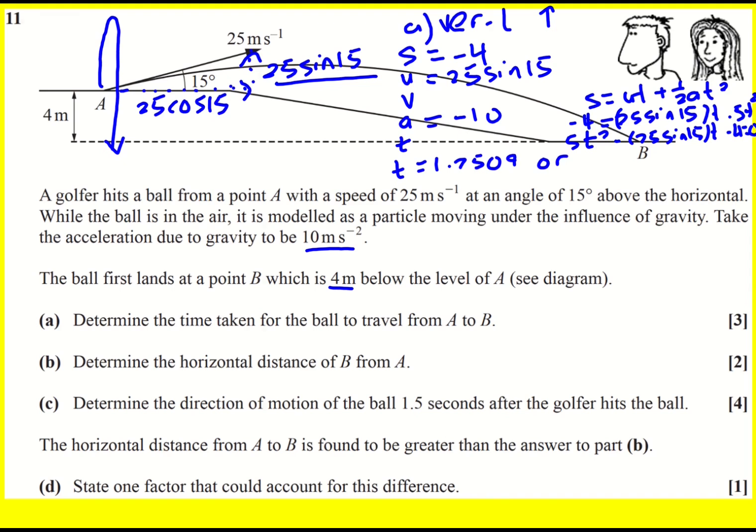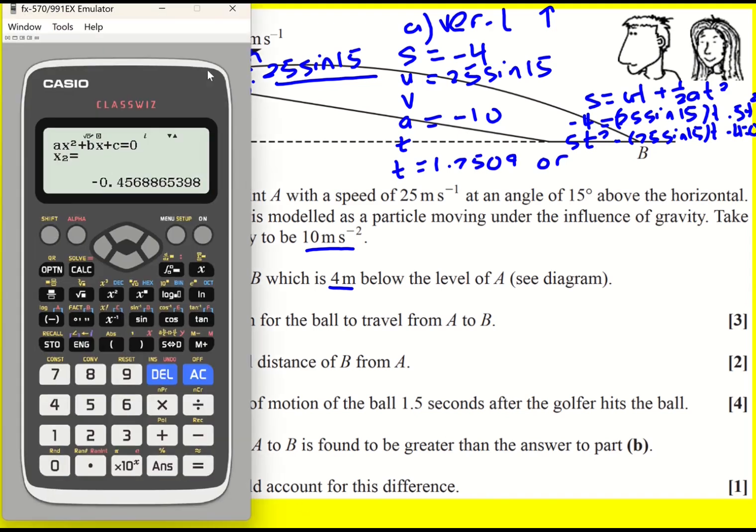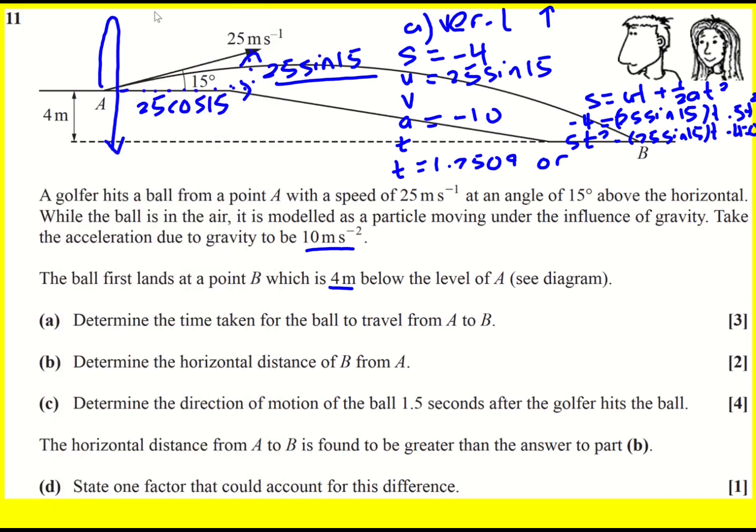There's going to be a second solution, I think it's good to state it, minus 0.4568. So that corresponds to this part of the curve here, but it's when time is negative, it's not a physical solution. And therefore, we've got T equals 1.75 seconds.